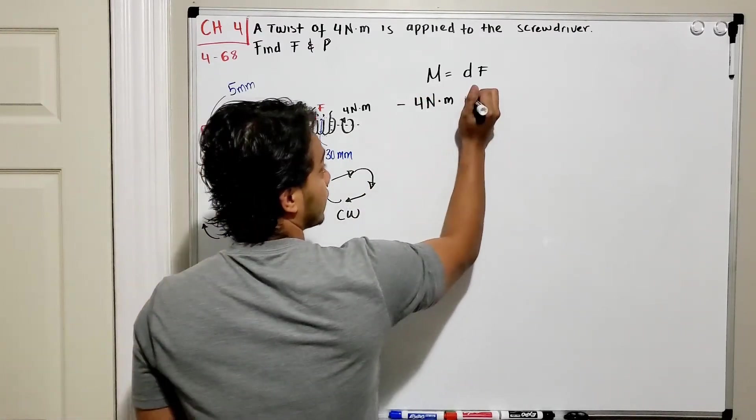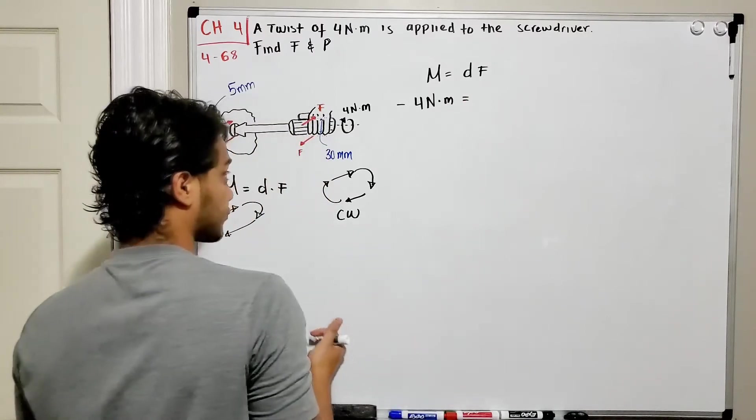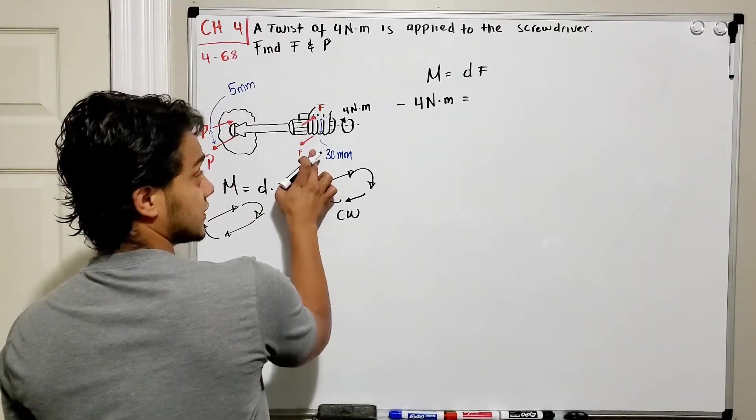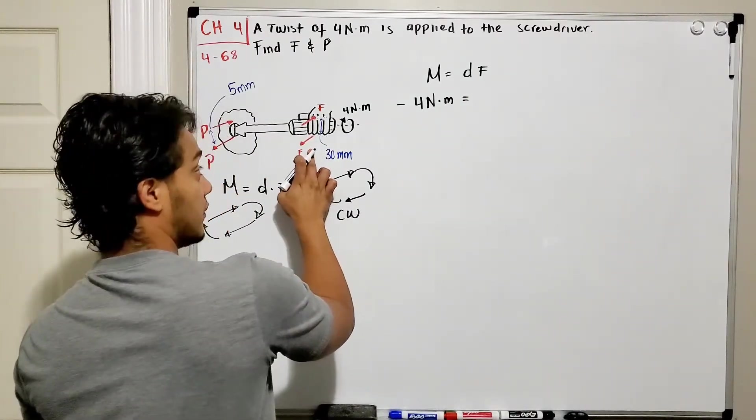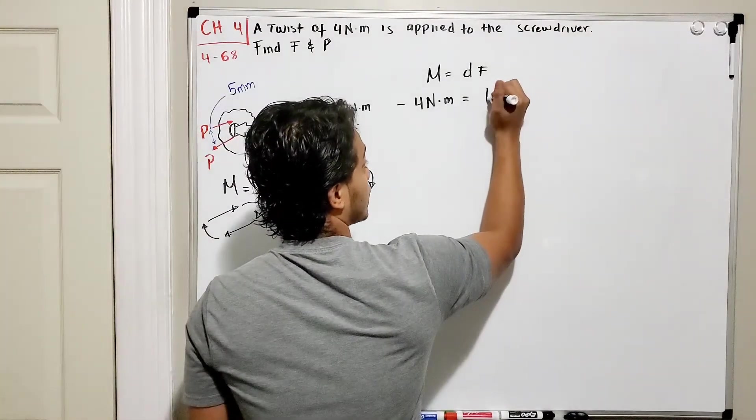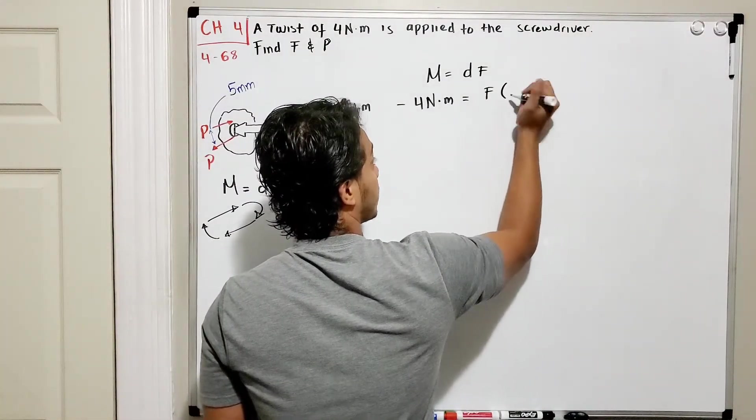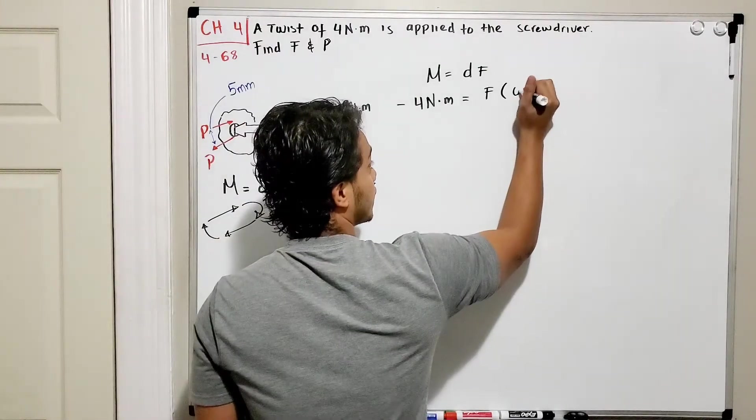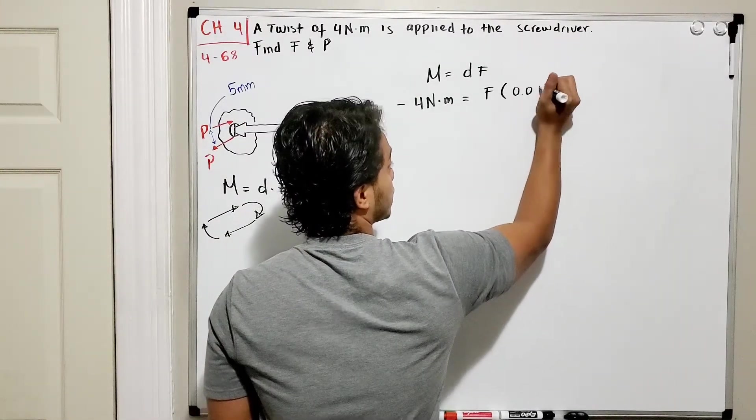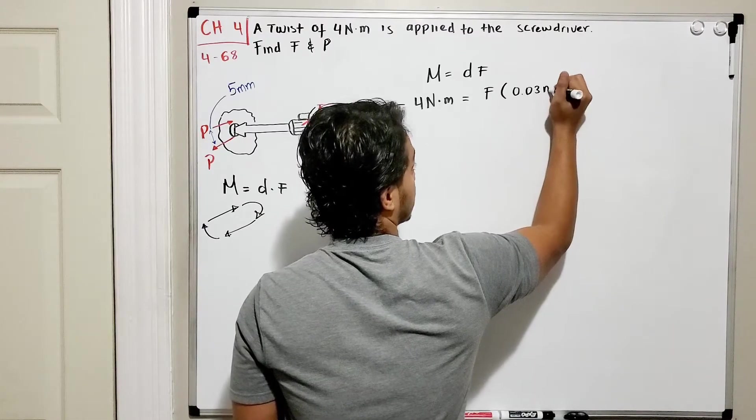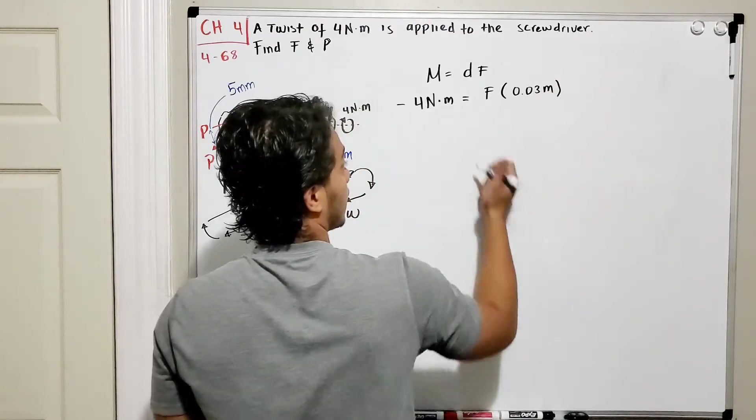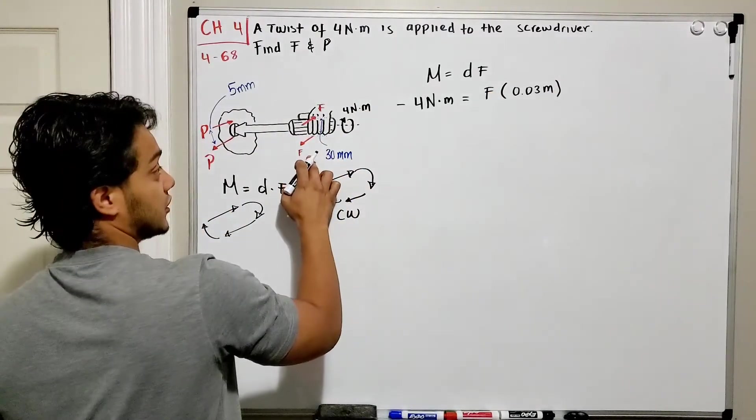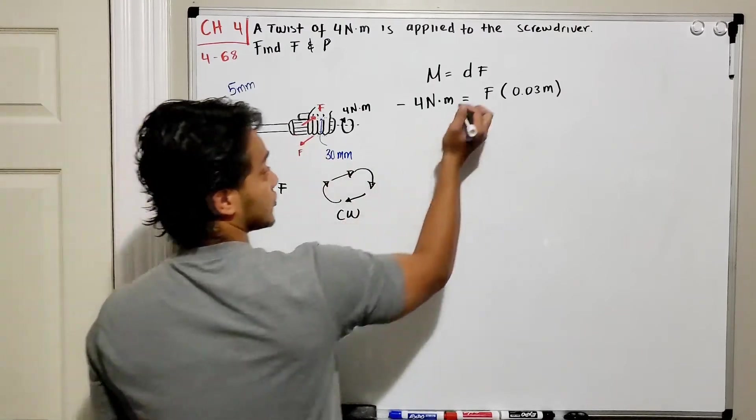It will be equal to the distance between these two forces multiplied by force. Force is the one that I want to find, multiplied by my distance. My distance, if I put it into meters, is going to be 0.03 meters.